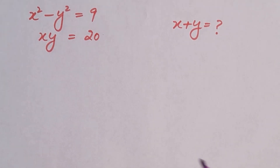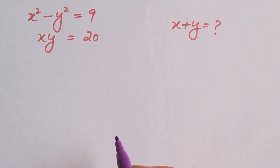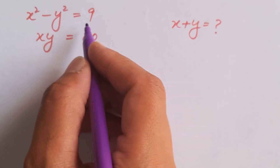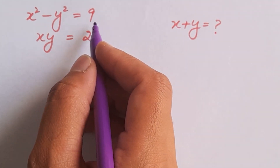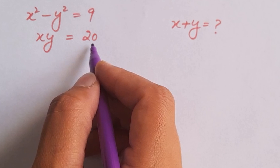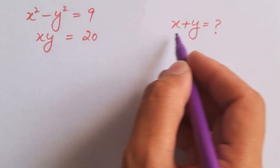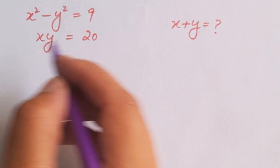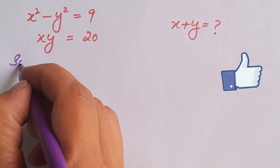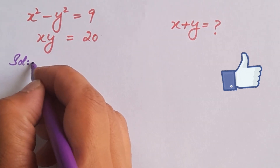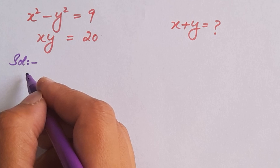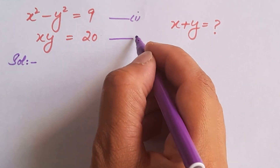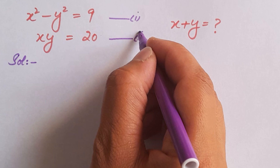Hello, welcome back all of you. In this video session, we are going to solve this system of equations where x squared minus y squared is equal to 9, and x times y is equal to 20. We have to find all possible solutions for x plus y. We are going to name these equations as equation 1 and equation 2. Let's get started and see the solution.